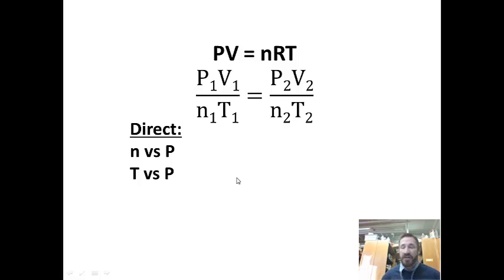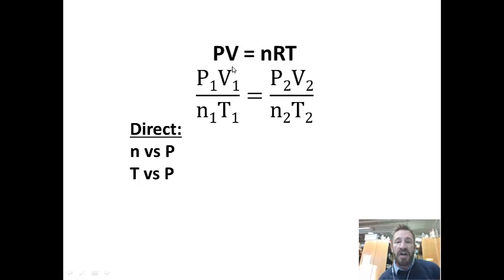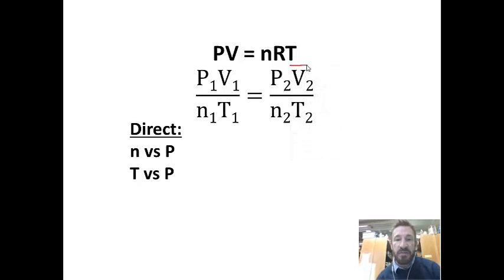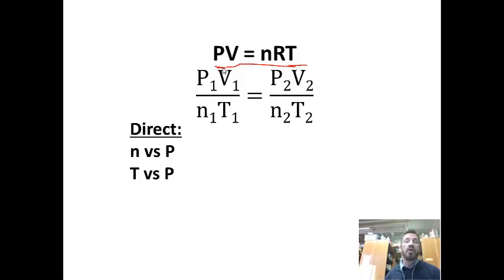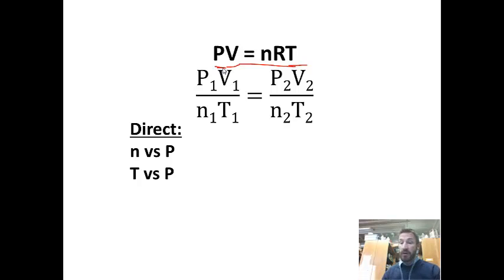So maybe you see something going on with our formula. If we have one variable on one side of the equation, such as temperature, and the other variable on the other side, such as pressure, those would have a direct relationship — when they're on opposite sides, if you increase one, it increases the other.